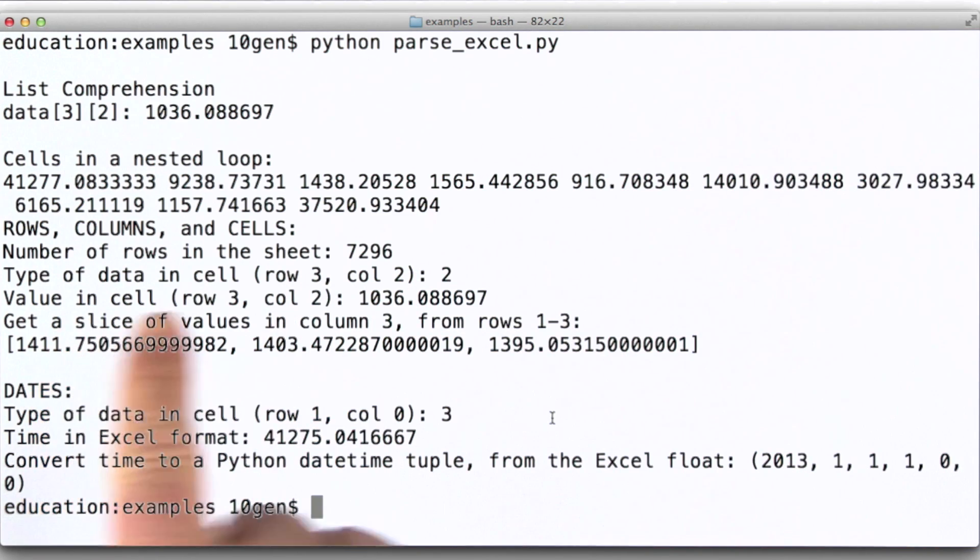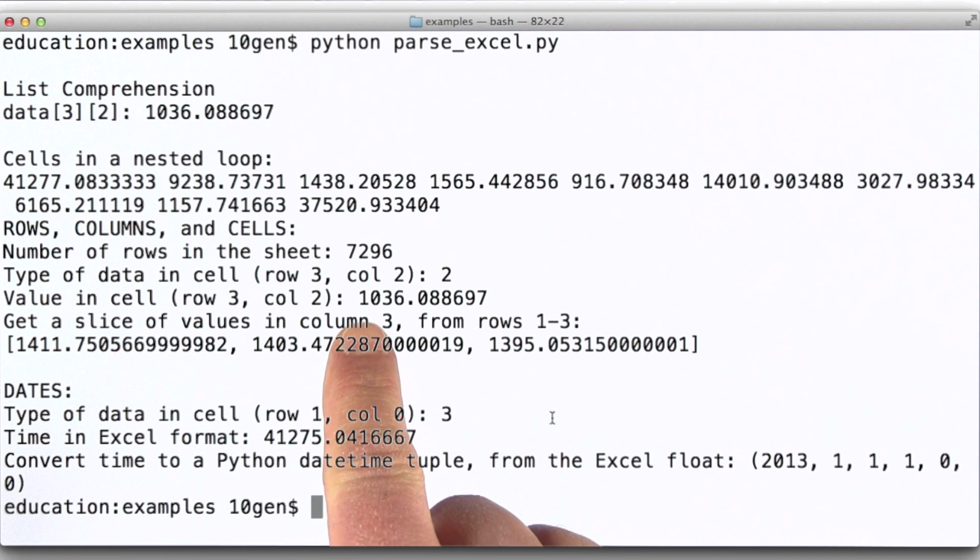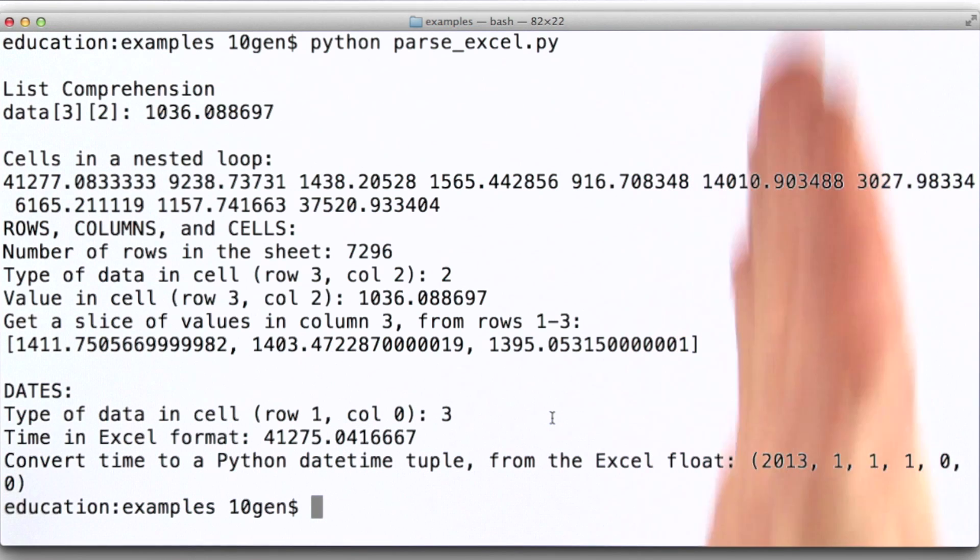We can see that the value that we've got there is 1036 and change. And here's the output from having taken a slice out of column three. So here's that piece where we were working with dates.